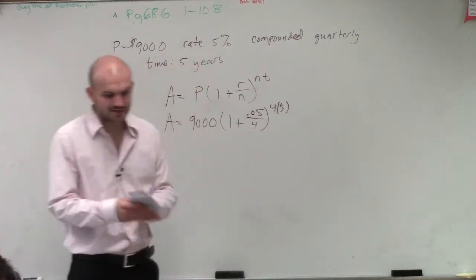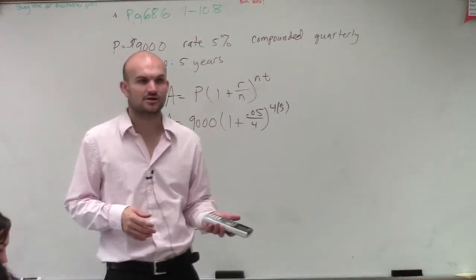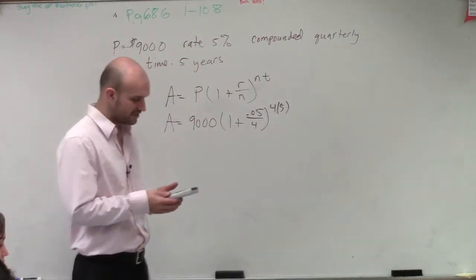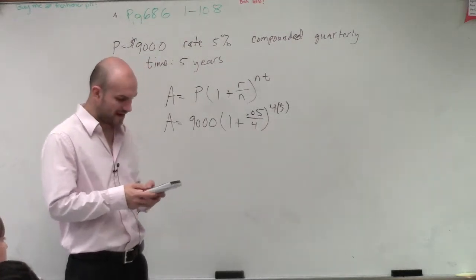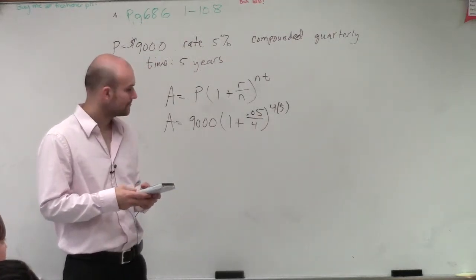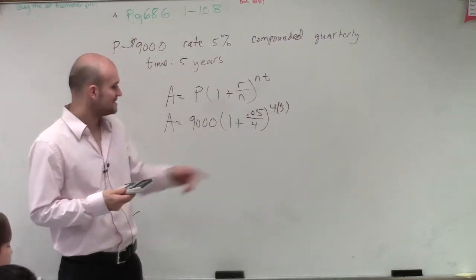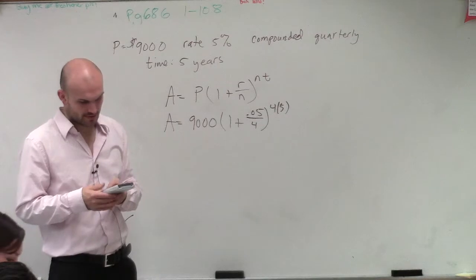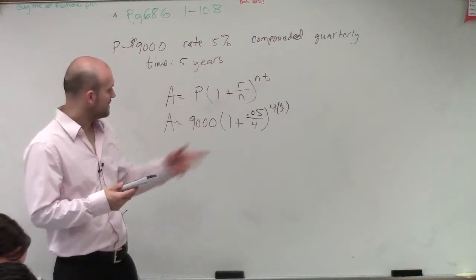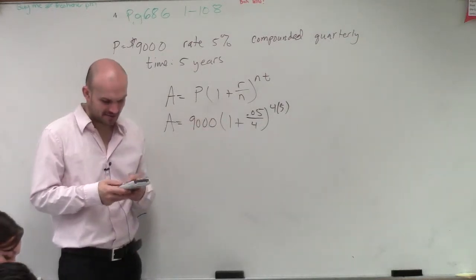I'll tell you exactly how to type this into your calculator. Do 0.05 divided by four, add that to one, then raise that to four times five, which is 20. Then multiply that by 9,000.